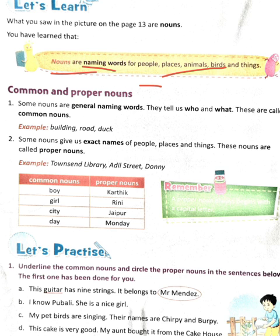Nouns are naming words for people, animals, places, birds, and things. Everything we can see has some name. Our next topic is Common and Proper Nouns. A common noun is a general naming word — it gives a general name.